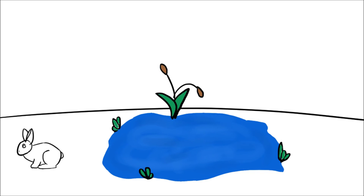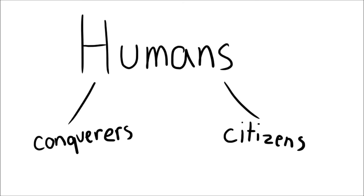The land ethic simply enlarges the boundaries of the community to include soils, waters, plants, and animals, or collectively the land. A land ethic changes the role of Homo sapiens from conqueror of the land community to plain member and citizen of it.